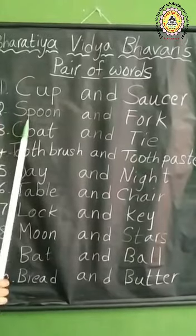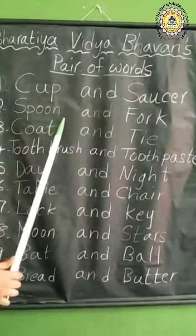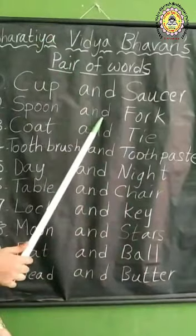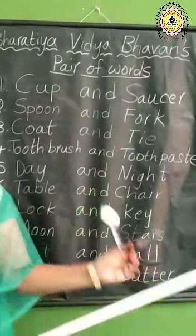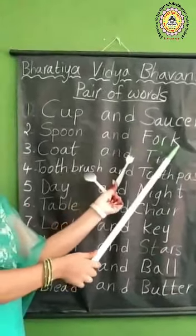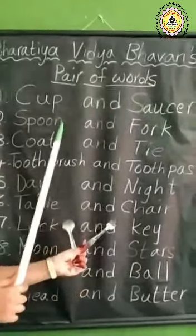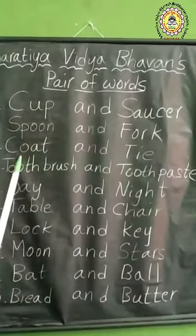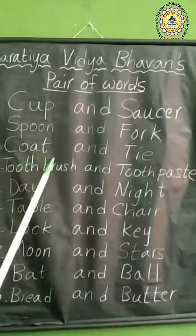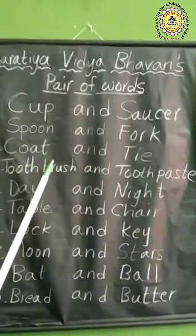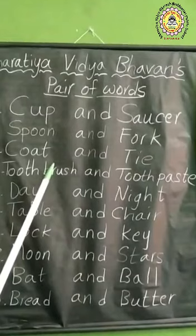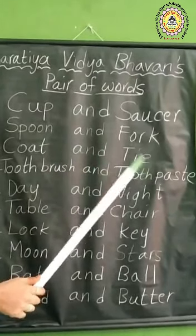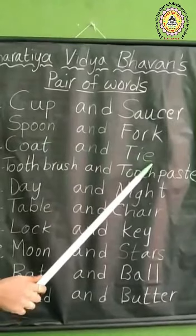Next example: S-P-O-O-N. Spoon. Spoon and fork. F-O-R-K. Fork. Spoon and fork. Next one: C-O-A-T. Coat. What is the pair word of coat? T-I-E. Tie. Coat and tie.